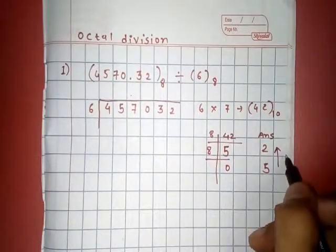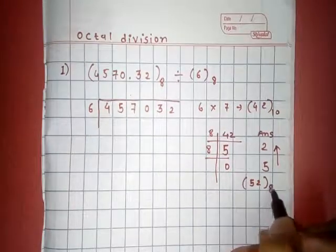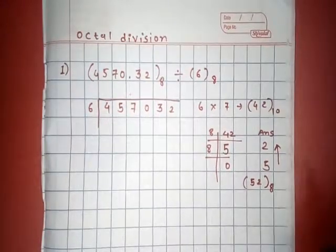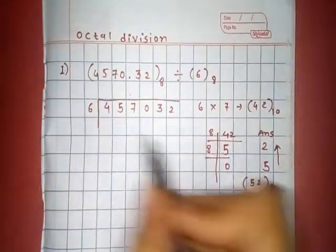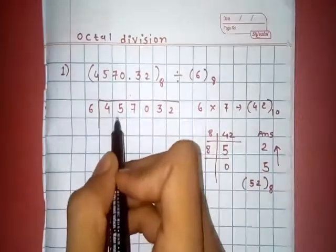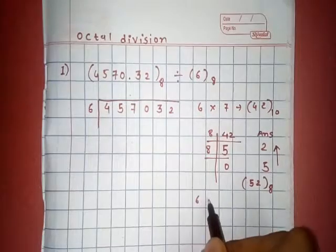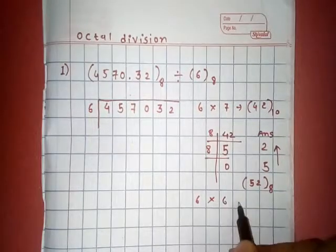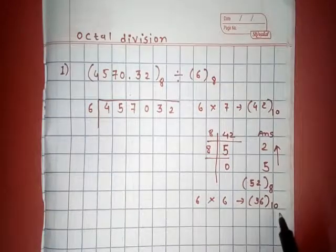This is 52 and this is 45, so 52 is more than 45, so we use one less number. 6 sixes, 6 into 6, that is 36 in decimal value. Now we convert this 36 into octal value.